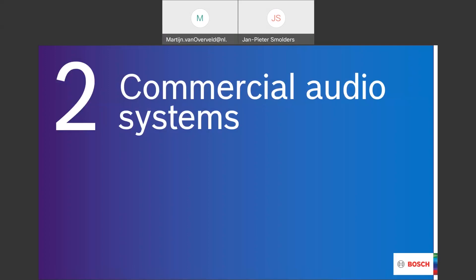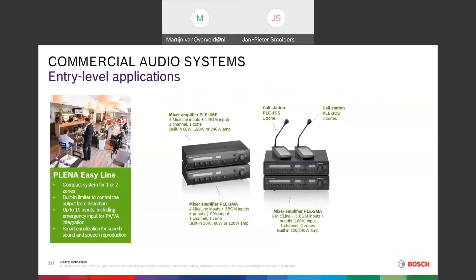For the entry-level Bosch solution — Planar Easy Line — we have a small system that can address one to two zones with a single amplifier channel. Looking at the picture on the left, we see two mixer amplifiers. The top one, the 1ME, has four microphone/line inputs and one background music input — one channel, one amplifier, addressing one zone — with a built-in amplifier of 60W, 120W, or 240W.